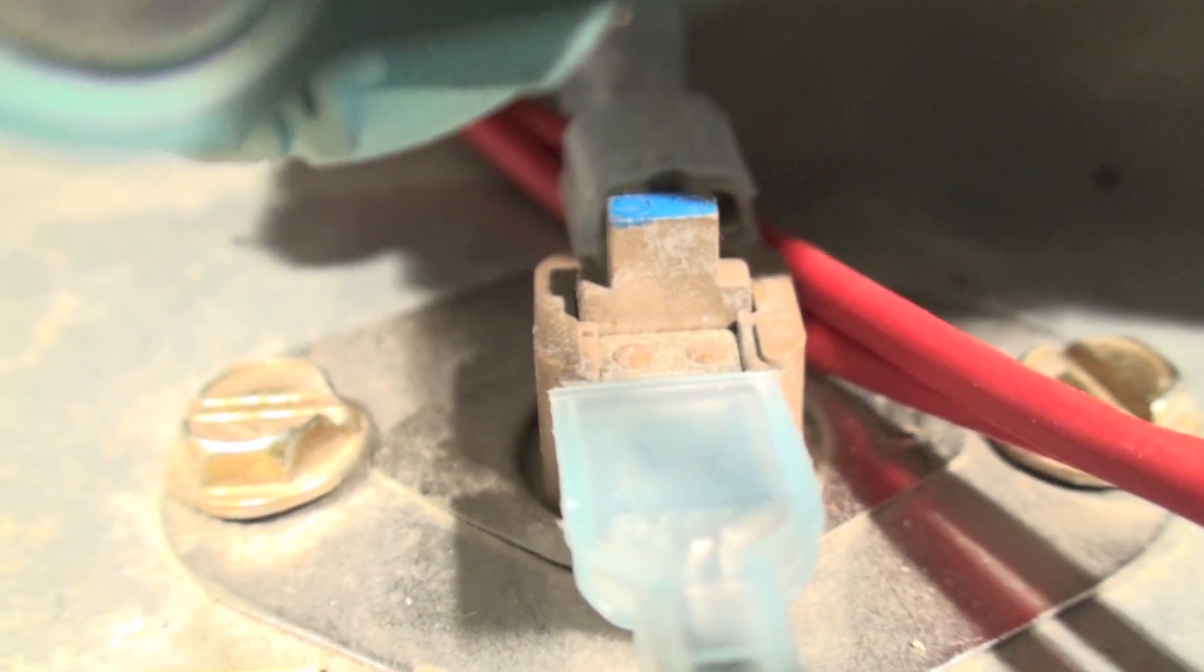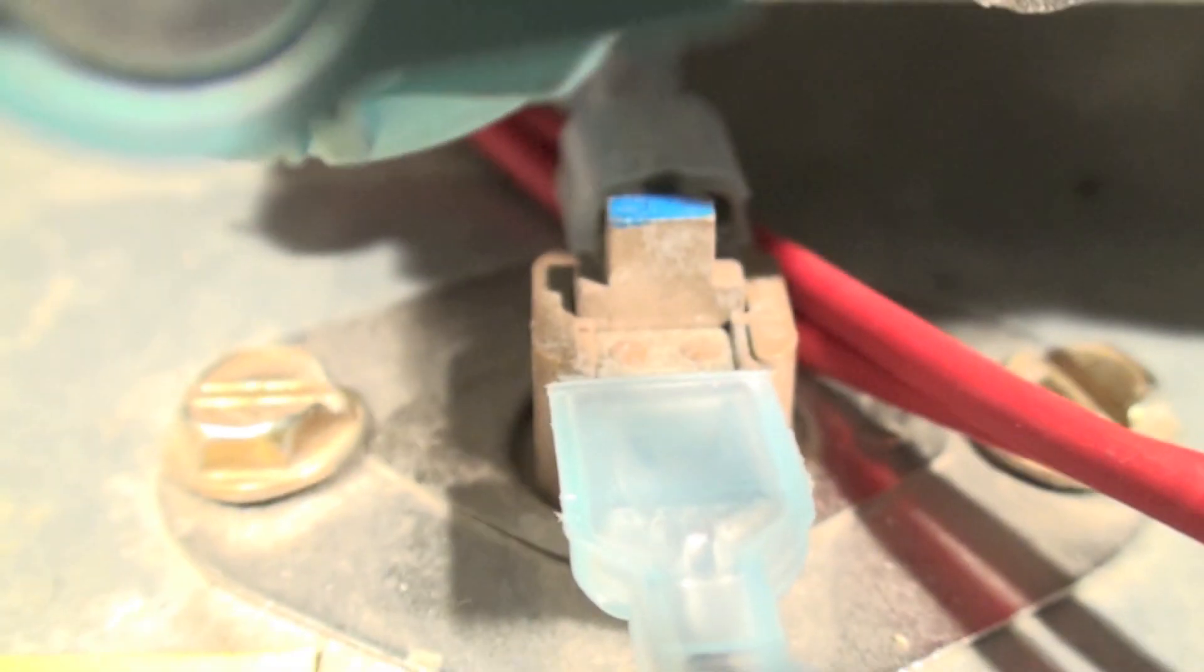Notice that little button on top. That means it's manual reset. It's a high temperature limit. There's one right there, you can just barely see it. There you go, you can see it now.